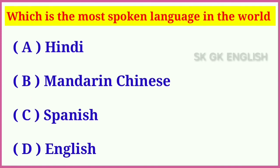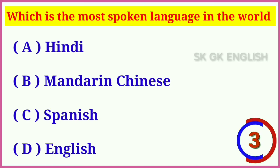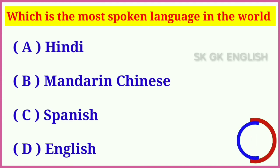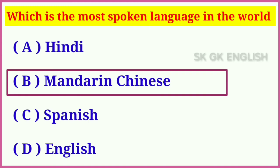Question number nine: Which is the most spoken language in the world? Options are: A. Hindi, B. Mandarin Chinese, C. Spanish, D. English. Correct answer is B. Mandarin Chinese.